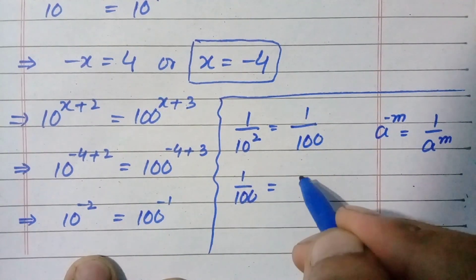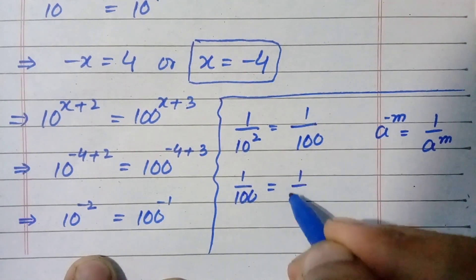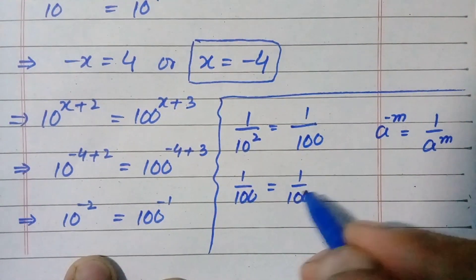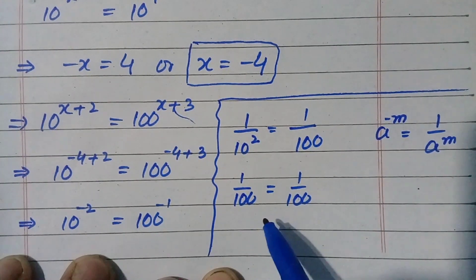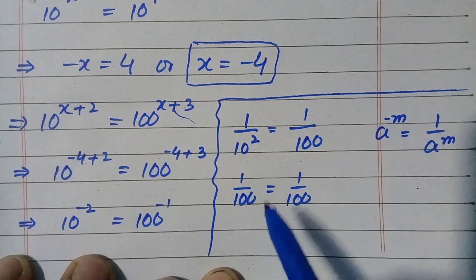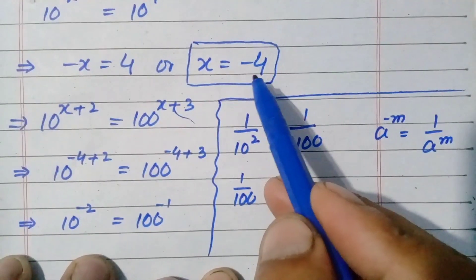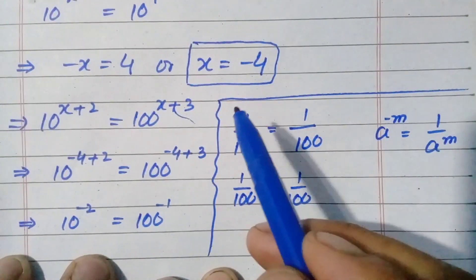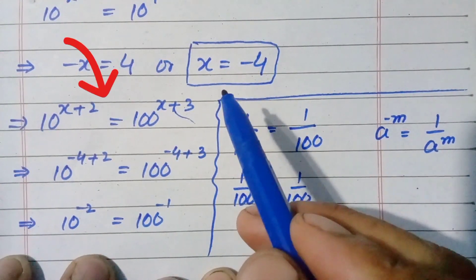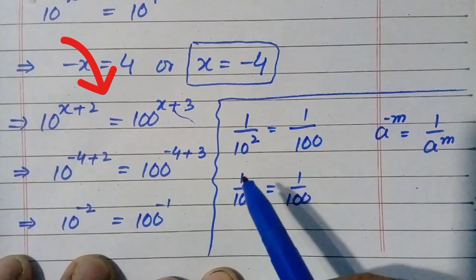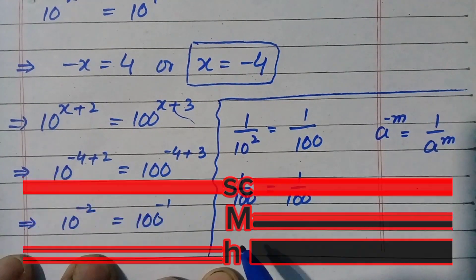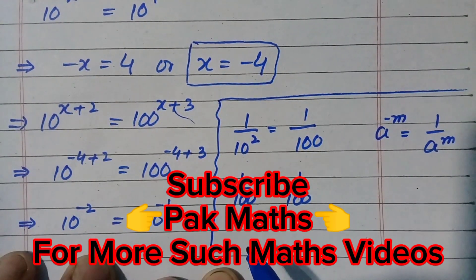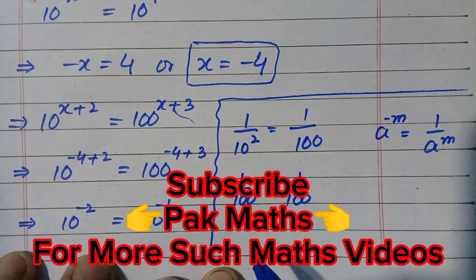Since 1 divided by 10 raised to power 2 equals 1 divided by 100, both sides are equal. This confirms that x equals minus 4 is the actual and correct root of the above exponential equation. Please subscribe to our YouTube channel for solutions to more viral math questions. Thank you so much.